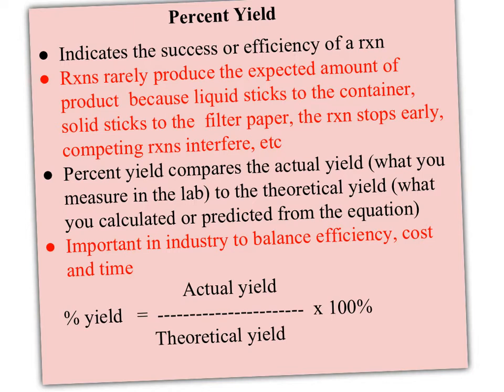So in industry, this is an important thing to know because you have to look at your efficiency, your percent yield, compared to the cost and the time it takes to increase that yield. So in industry, it's all about making as much product as you can as quickly as you can.